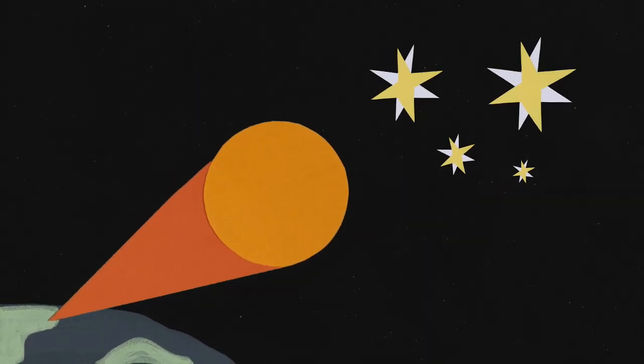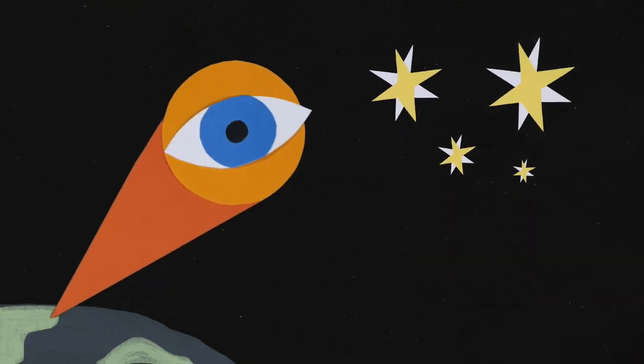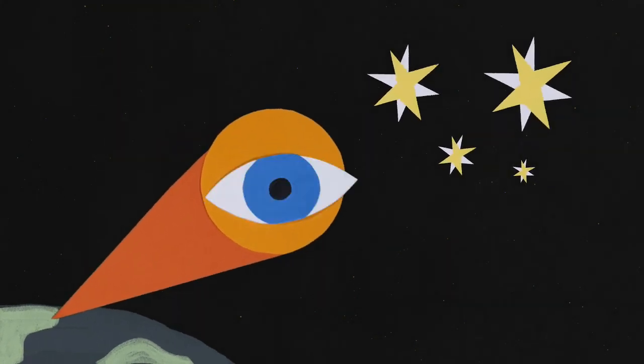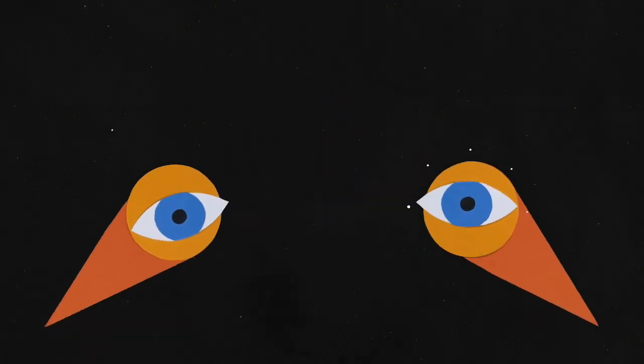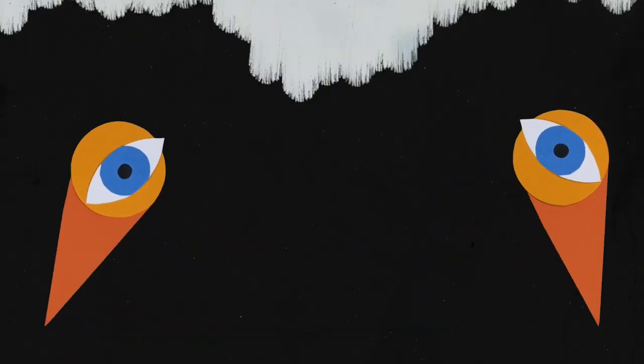It wasn't long before astronomers started extracting information from the light of distant stellar objects. In 1869, two scientists independently decided to point a spectroscope toward the corona during a total solar eclipse.